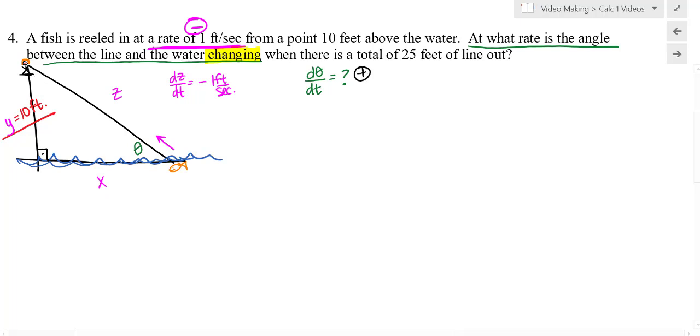And then I know that I am 10 feet above the water at all times. That is not changing. And at what rate is the angle between the line and the water? I did try to draw the water blue there on the bottom. So that is this angle theta right there. So we are trying to find d(theta)/dt. And we need to think if d(theta)/dt is going to be getting bigger or getting smaller. If my line is coming in, that means the fish is now perhaps right here. And my theta is bigger than it was. So this should be getting bigger.